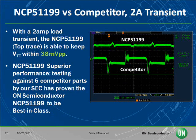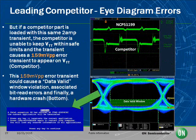The ON Semiconductor NCP-51199 is a drop-in replacement for a popular industry standard part made by many manufacturers. The NCP-51199 was tested against six competitor parts and was proven to be best in class. With a 2-amp load transient, the NCP-51199, shown in the top trace, is able to keep the VTT rail within 38 millivolts peak to peak from the reference input. A popular competitor part loaded with the same 2-amp transient is unable to keep VTT within safe limits, causing a 159 millivolt peak to peak error transient on VTT.